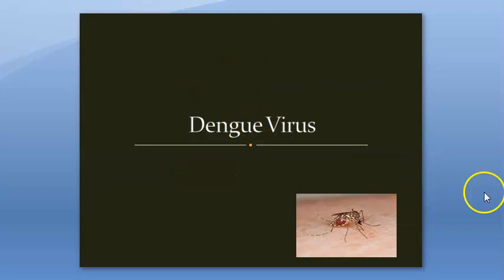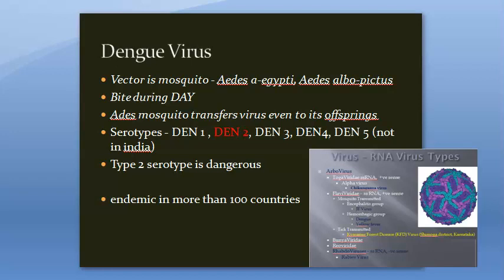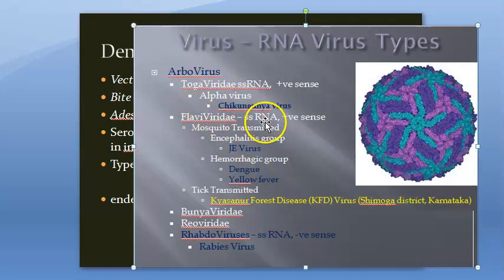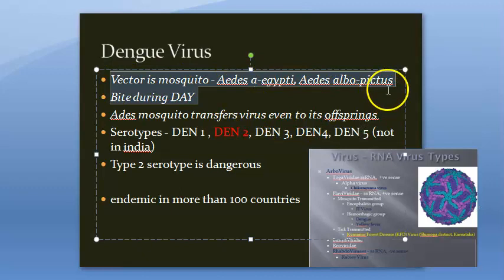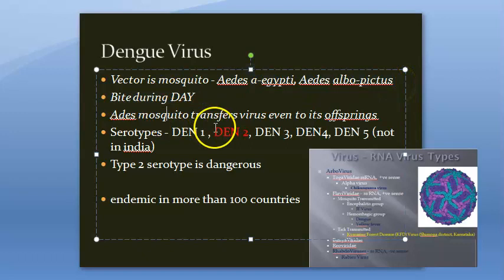First of all let's recap what we have seen so far. We started off with the dengue virus — it is an RNA virus, an arbovirus belonging to Flaviviridae. It is a single-stranded RNA virus, mosquito transmitted, and belongs to the hemorrhagic group of viruses.